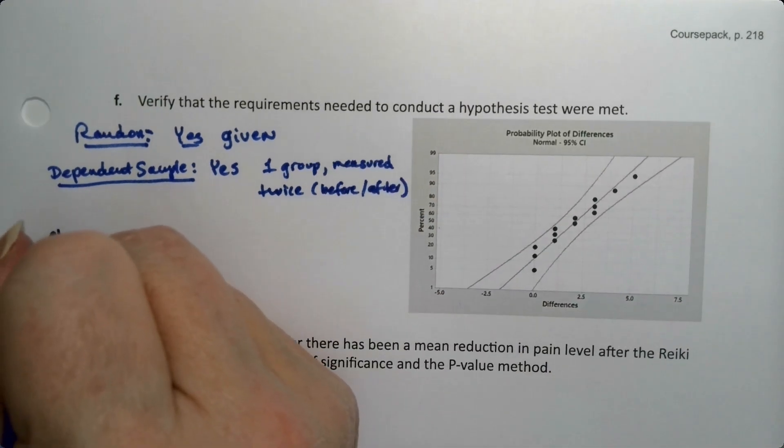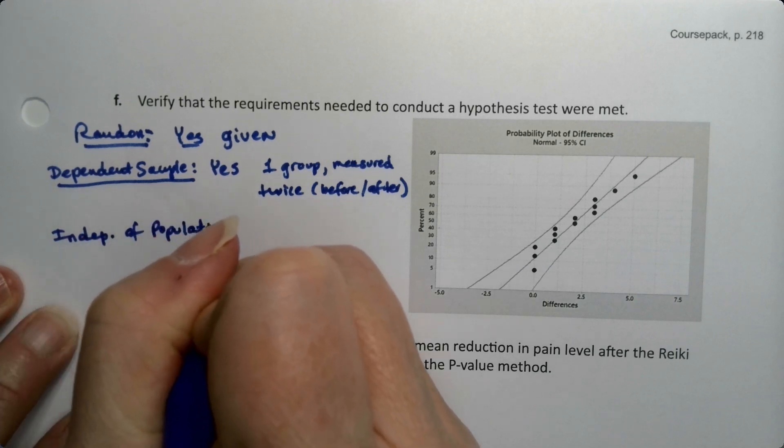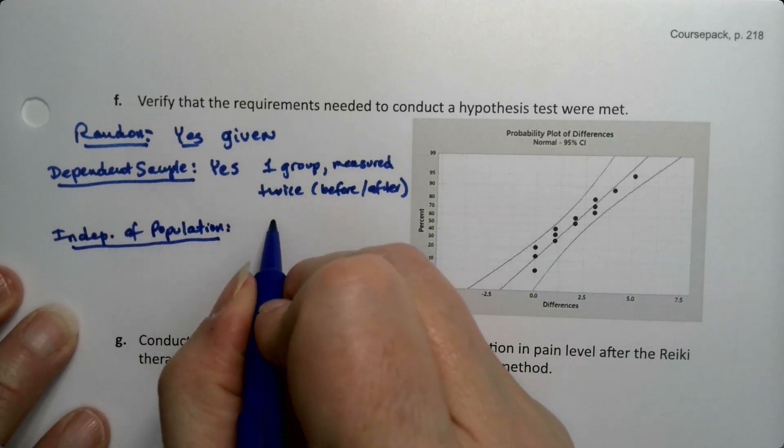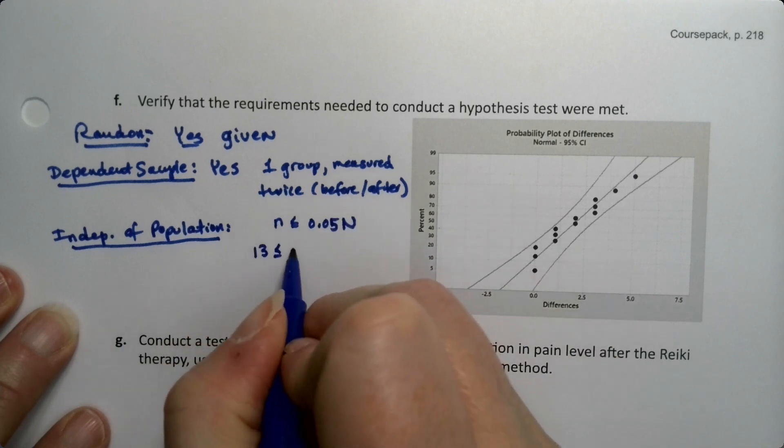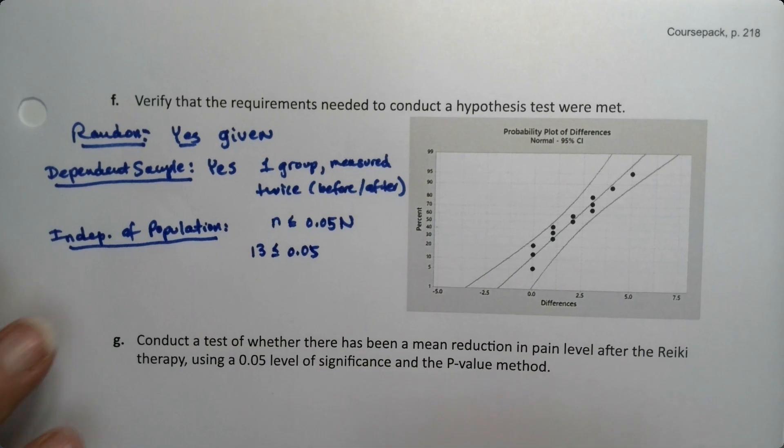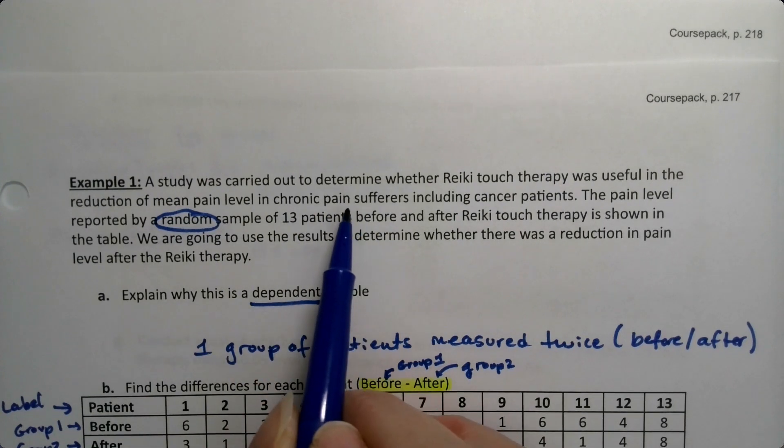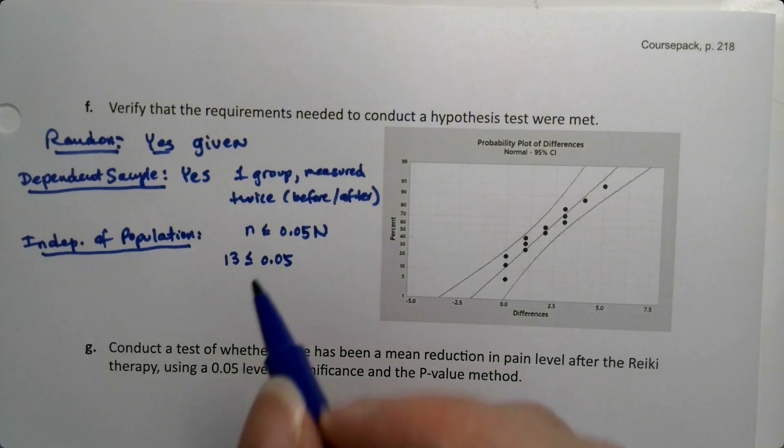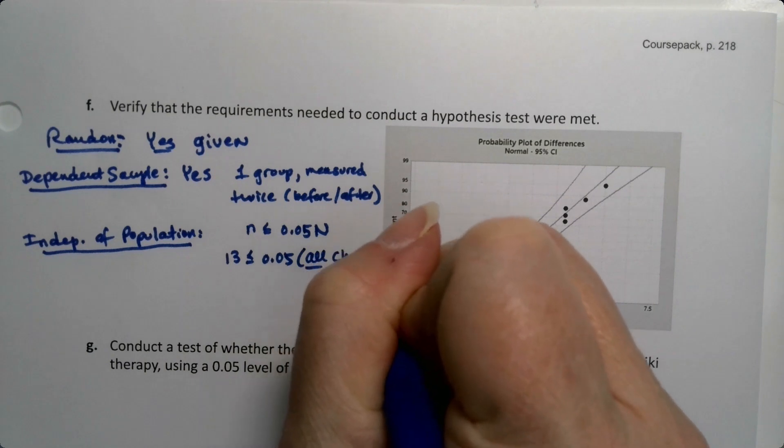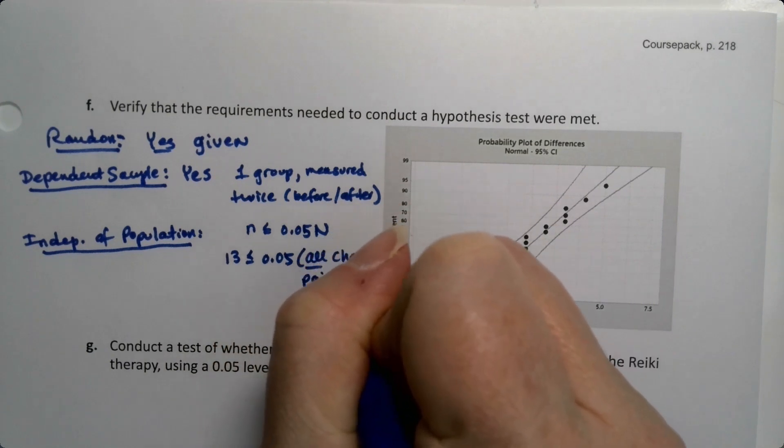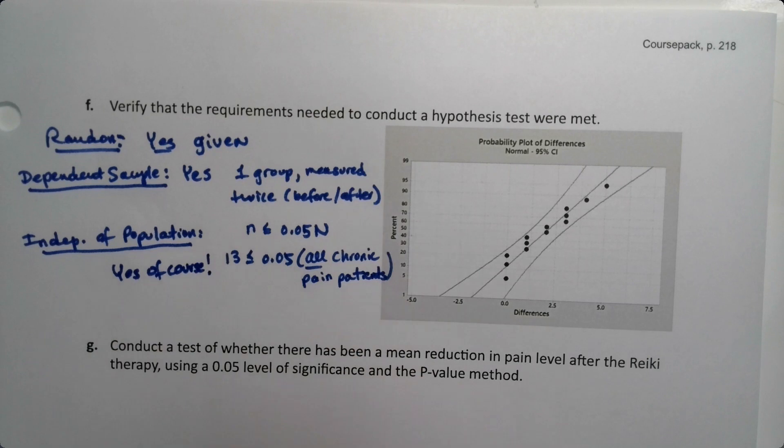We need the sample to be independent of the population, and we've done that a million times. That is that your little n is less than 0.05 capital N. Now little n is 13. Capital N is a little weird in this case because it wasn't really given. It's just implied that it's all chronic pain sufferers. This would be less than 0.05 of all chronic pain patients. And that's a yes of course. There's just tons of people in chronic pain.